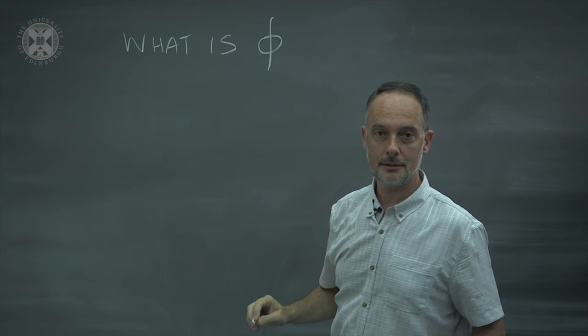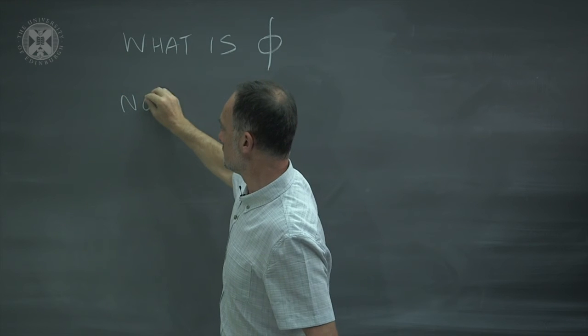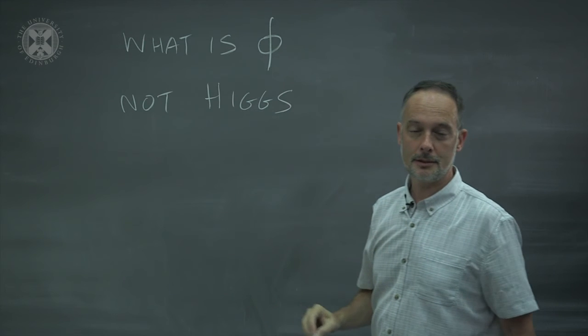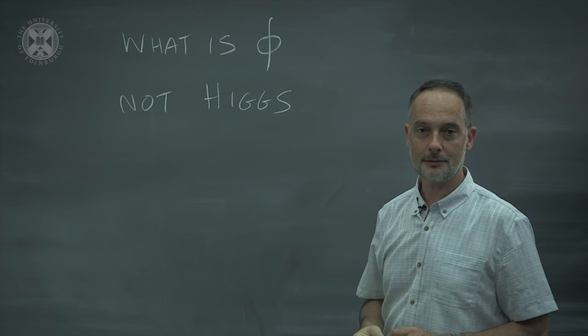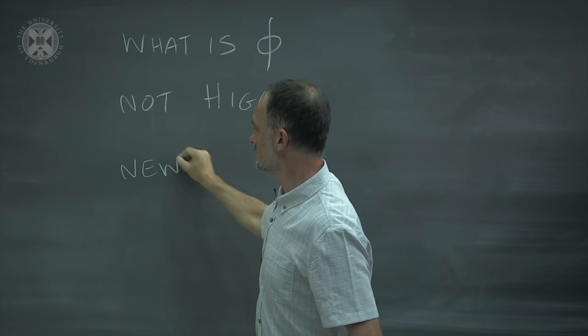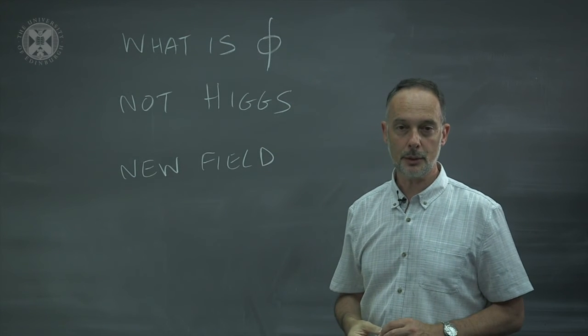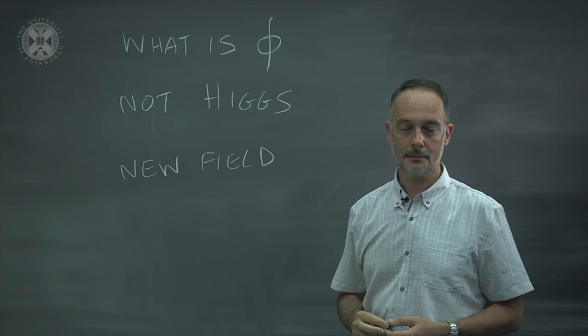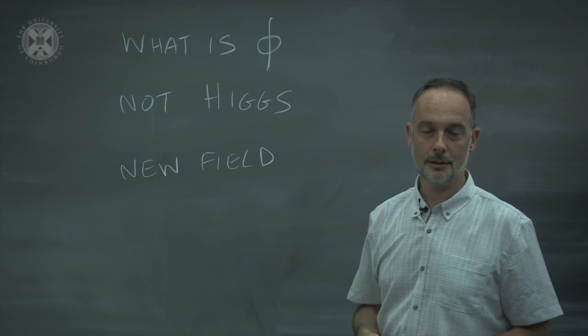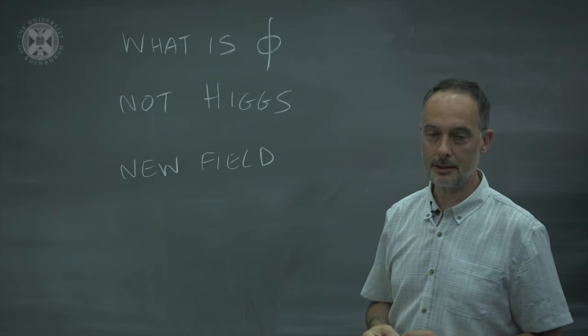What is the scalar field whose associated vacuum density is going to have driven inflation? It's not the Higgs field. We know that because it would give the wrong amplitude of density fluctuations in the universe. So it has to be something else. A new field whose corresponding particle interacts very weakly so that we haven't seen it so far. Most people aren't worried by that. There are many fields in nature, many particles that interact extremely weakly. It doesn't seem too bad to have one extra for the cosmological payback that it gives you.